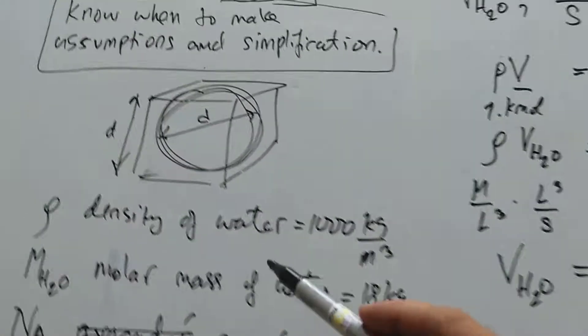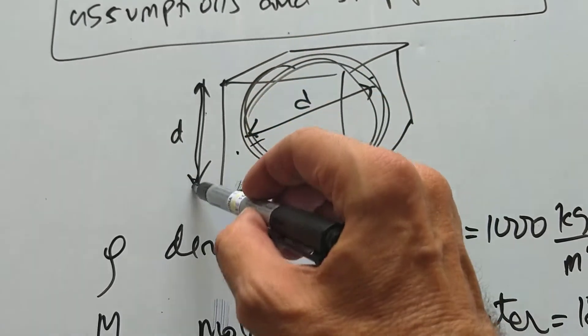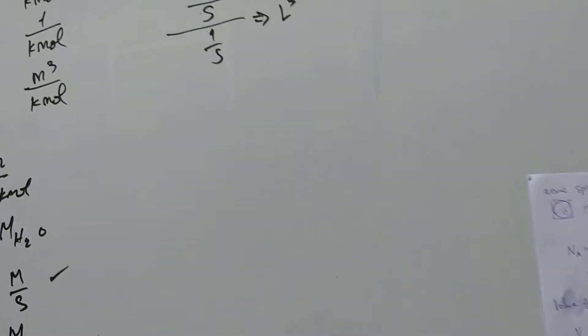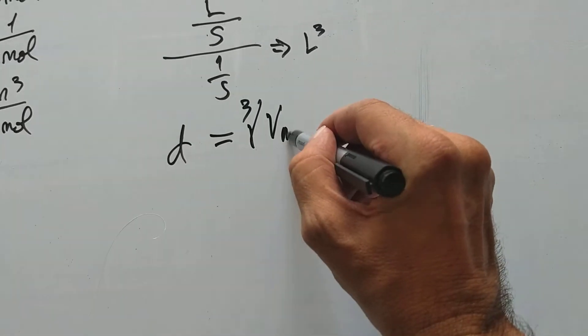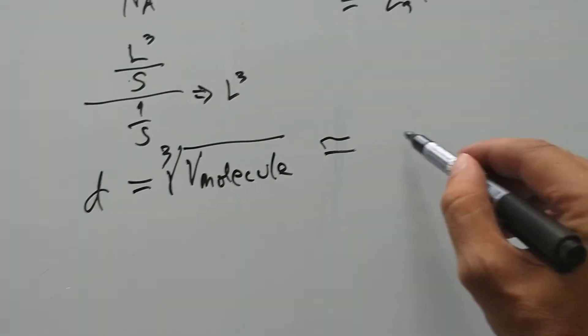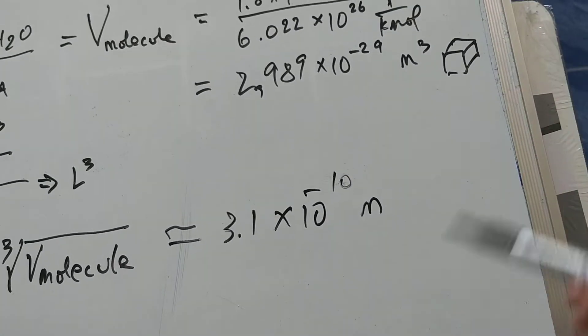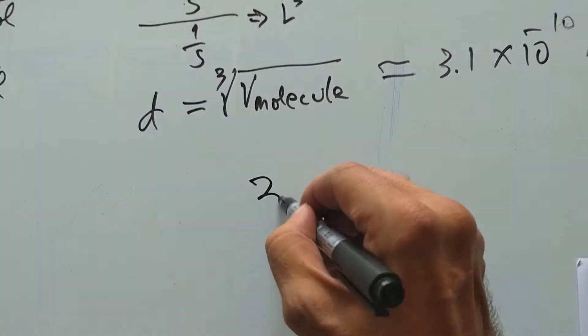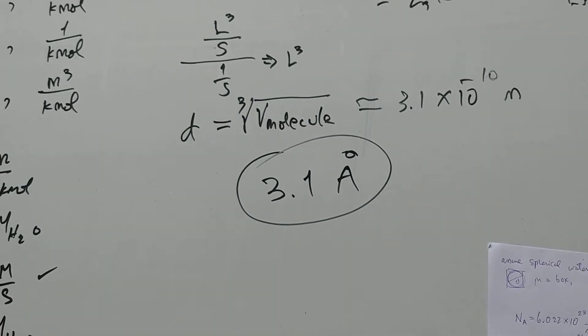However, I don't want that. I want the diameter of my water molecule. So, I have to cube root the volume. D is actually the cube root of the volume of the molecule. If you use your calculator, you end up with 3.1 times 10 to the minus 10 meters. In other words, 3.1 angstroms. Amazing.